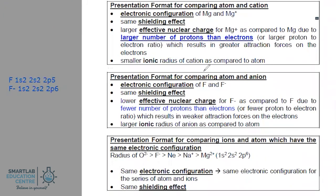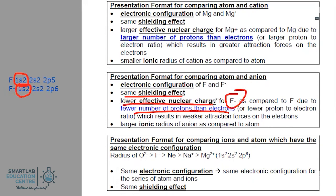We continue now to look at the size of an atom and an anion. Looking at the electronic configuration, the shielding effect is offered by the fully filled first electron shell, so again you have the same shielding effect. But in this case, F⁻ has fewer protons than electrons, which means F⁻ has a weaker, lower effective nuclear charge, and therefore a weaker attraction force on the electrons. So the anion F⁻ will have a larger ionic radius than compared to fluorine.